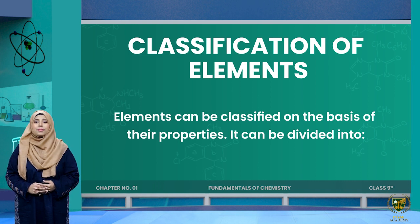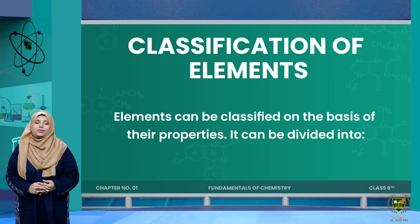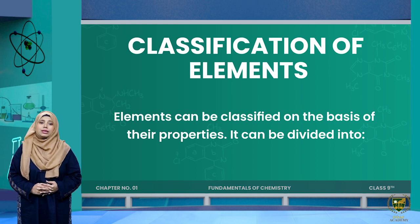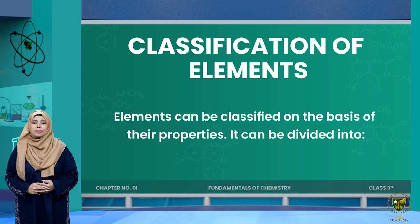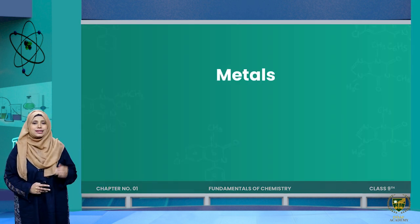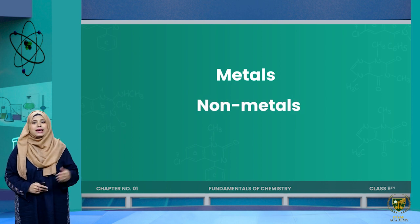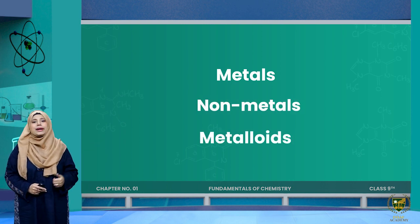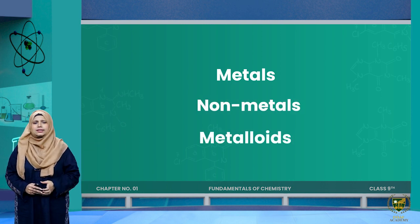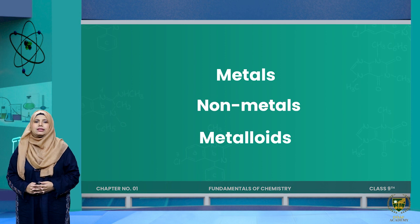In this lesson we are going to discuss in detail the classification of elements on the basis of their properties. If we classify elements on the basis of their properties, we have three classes: metals, non-metals, and metalloids. In this lecture we will see in detail what is the difference between these three and what their symbols are.